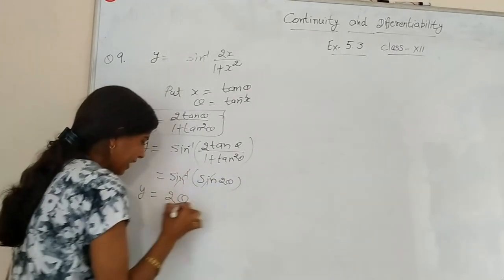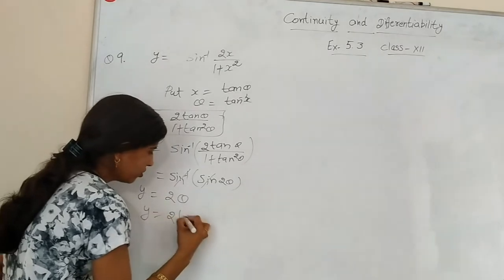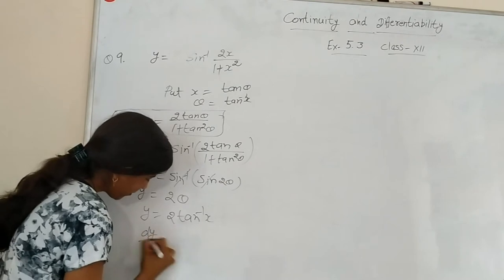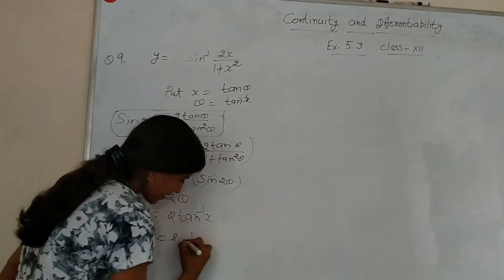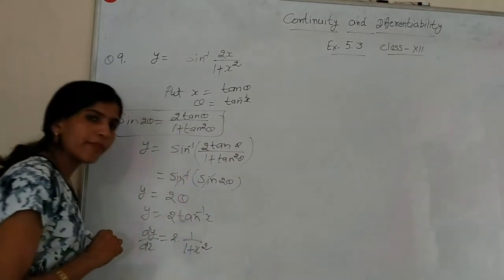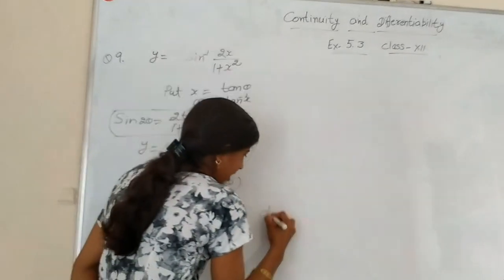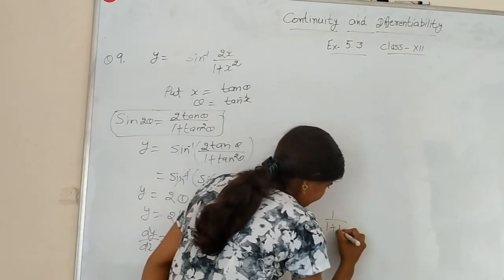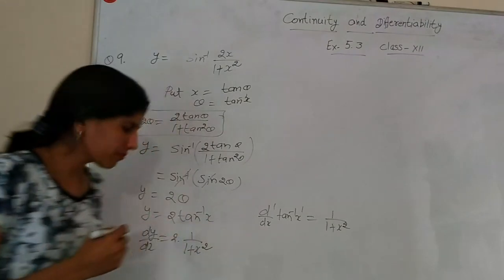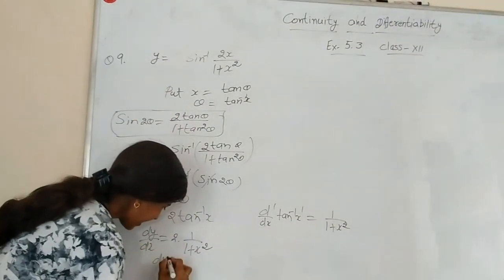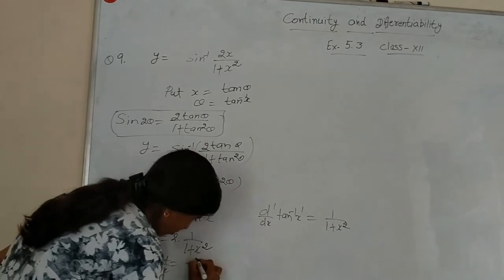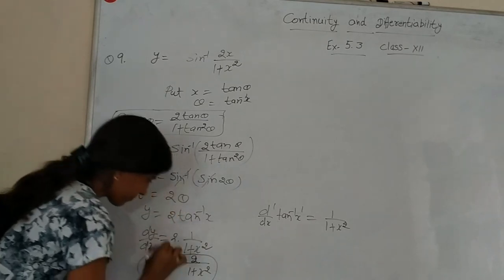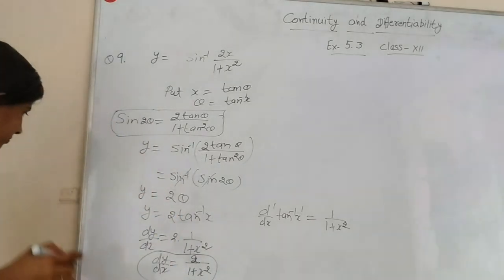So y = 2θ, and since θ = tan⁻¹x, we have y = 2 tan⁻¹x. Now taking the derivative, dy/dx = 2 times the derivative of tan⁻¹x, which is 1/(1+x²). Therefore dy/dx = 2/(1+x²). This is our answer.